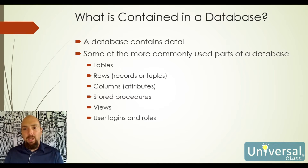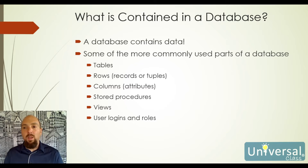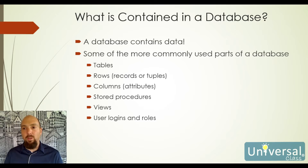So what's contained in a database? A database contains data. Some of the more commonly used parts of a database are tables, rows — which are also called records or tuples — columns, which are actually called attributes, stored procedures, views, user logins and roles, and other security things. Those are the basics. There are more that we'll cover throughout the course.